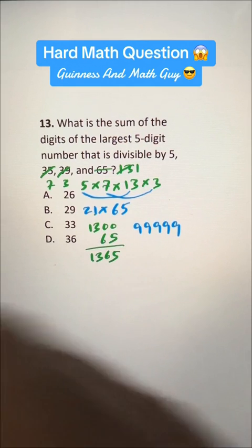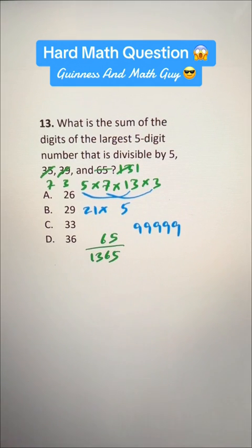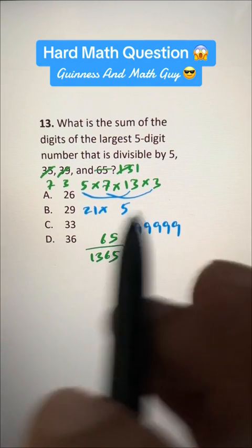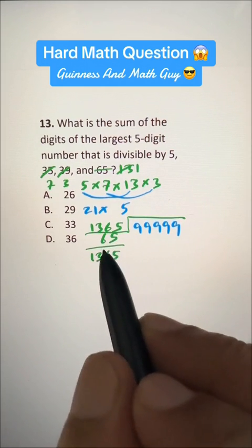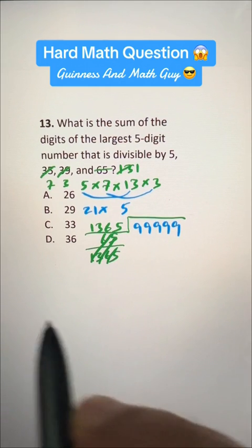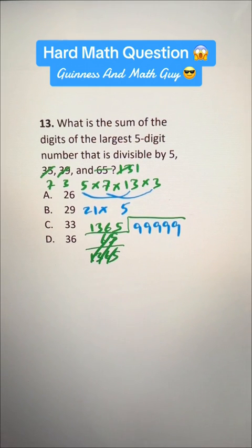Let's write 1365 here and divide it like this. Let's just ignore it.